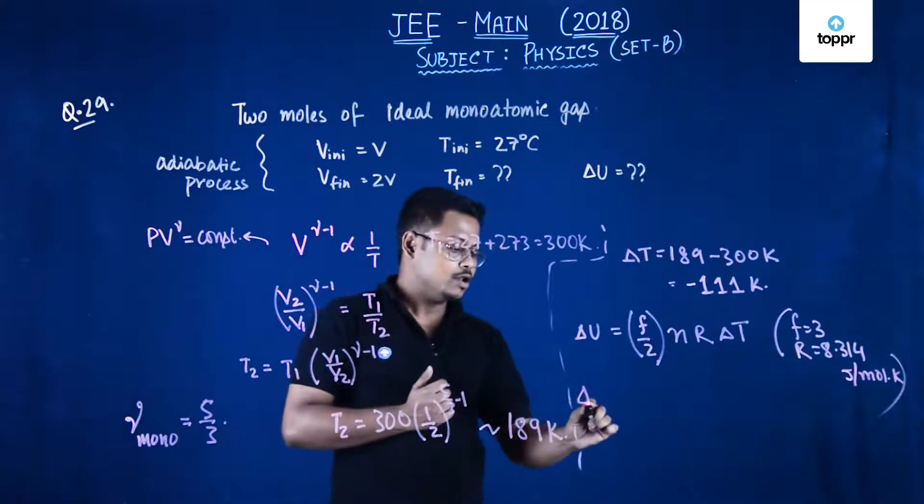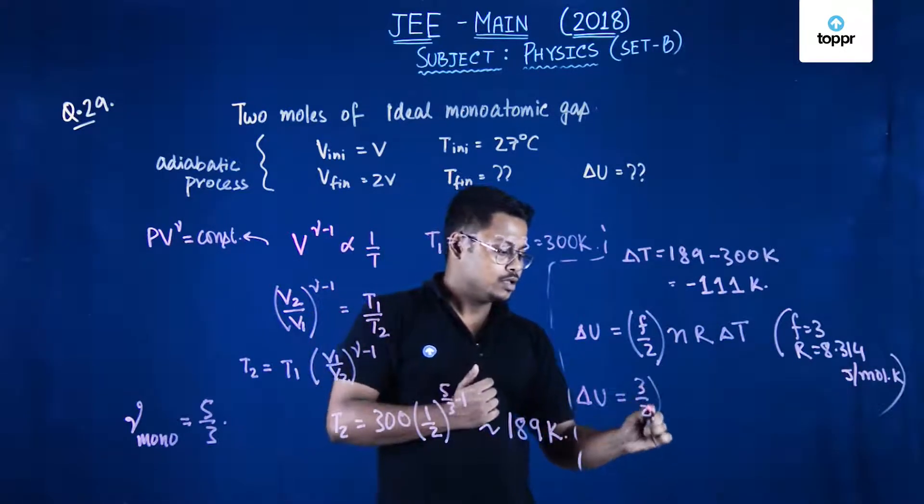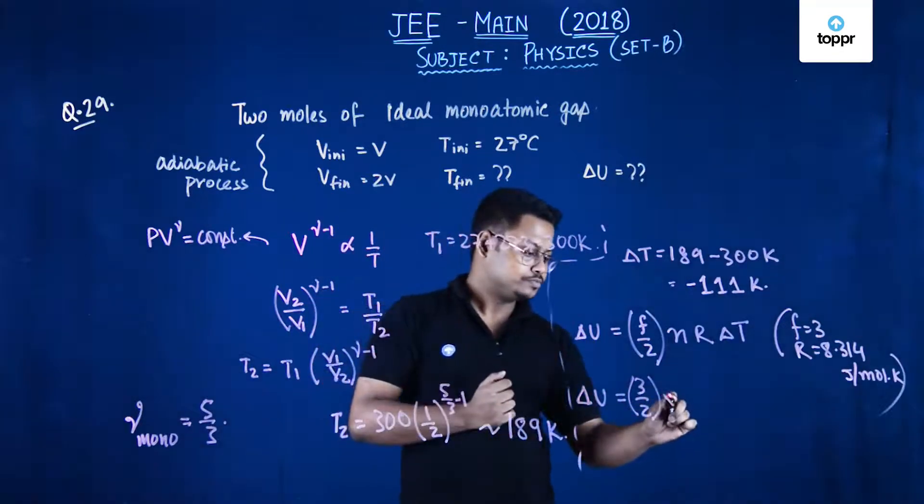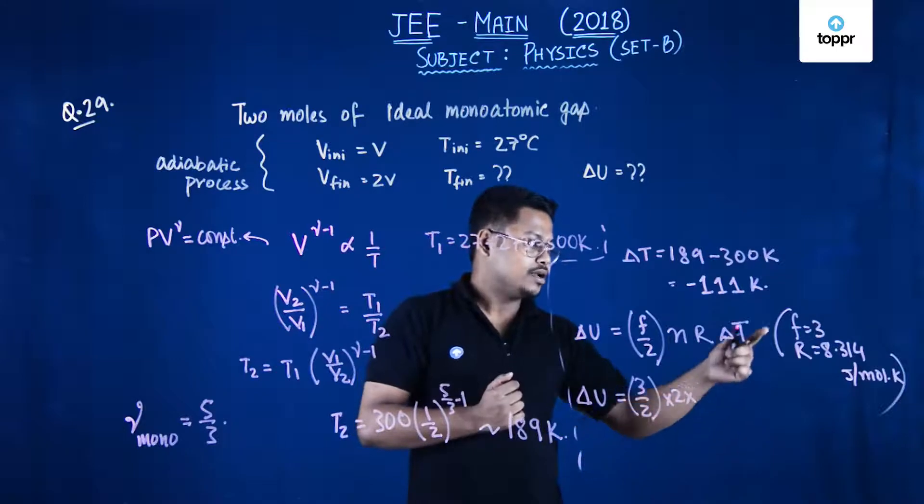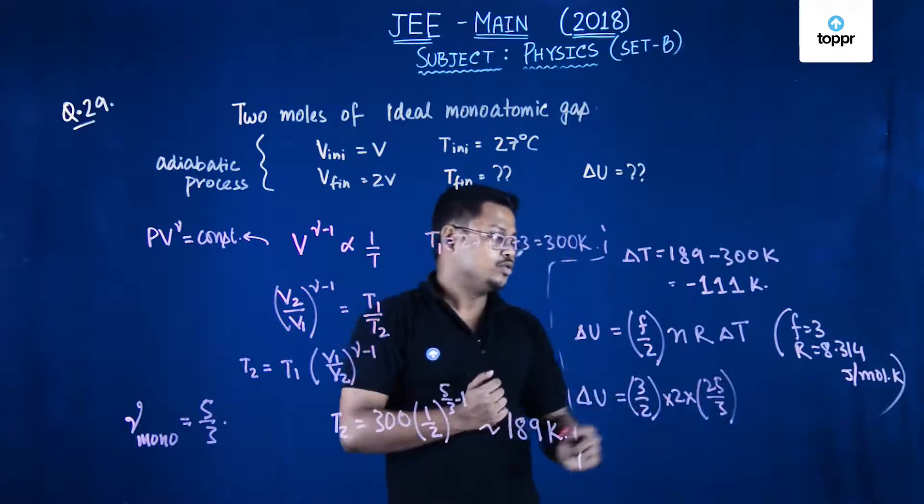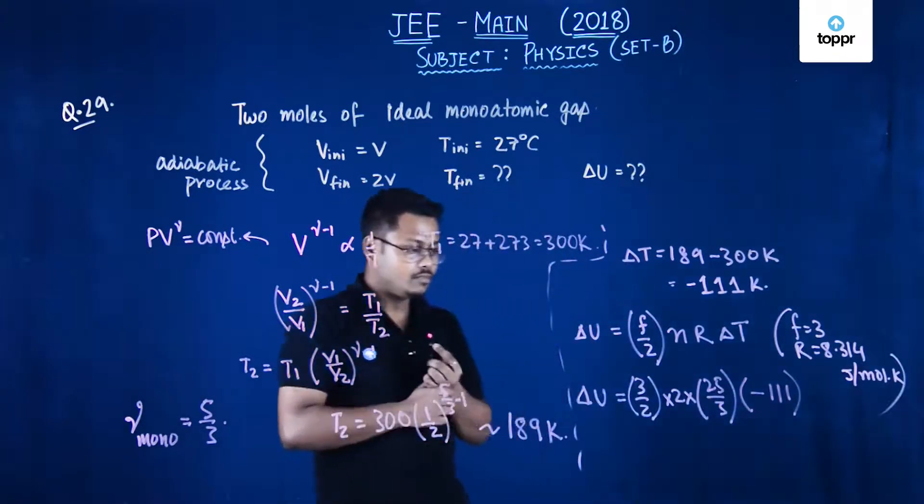So if you just put the value, delta U will turn to be 3 by 2. Number of moles is 2, so into 2 into R we can write it as 25 upon 3, delta T into delta T will be minus 111.